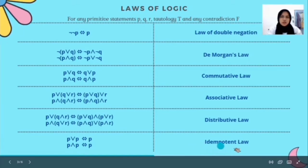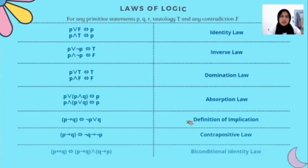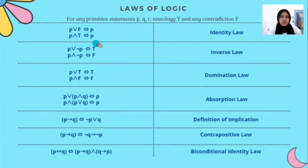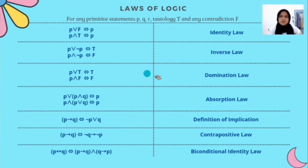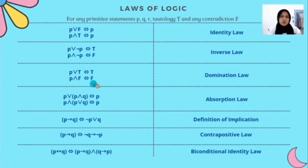The next one is idempotent law: P ∨ P is equivalent to P, and P ∧ P is equivalent to P. The next one is identity law: P ∨ F is equivalent to P, and P ∧ T is equivalent to P. The next one is inverse law. For example, P ∨ ¬P is equivalent to tautology (T), and P ∧ ¬P is equivalent to contradiction (F). The next one is domination law. For example, P ∨ T is equivalent to T (tautology), and P ∧ F is equivalent to F (contradiction).